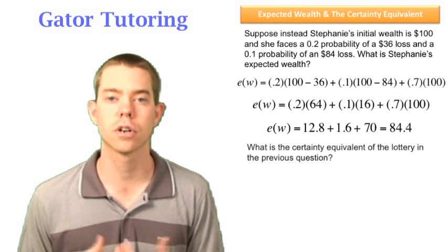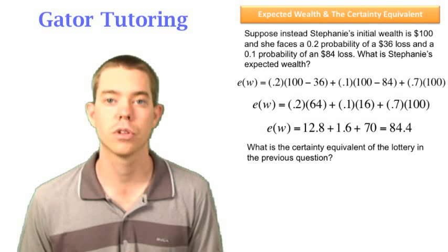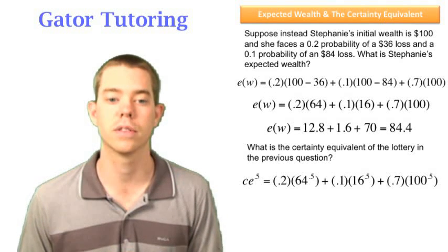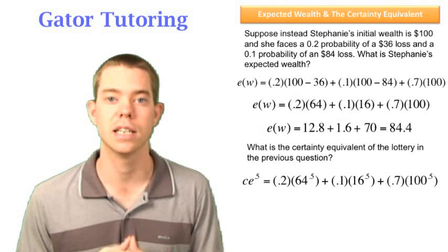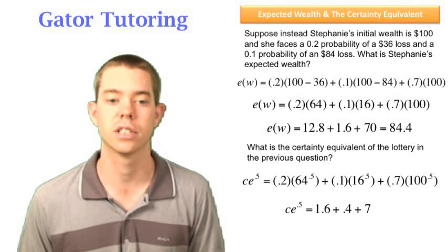The next question says, what is the certainty equivalent of the lottery in this previous question? Well, we know with the certainty equivalent, we're going to be looking at her utility function. So we bring that in. Now we're going to have some math on the right side equal to the square root of the certainty equivalent on the left. We condense this down. We see the right side is equal to 9. So we square 9. We can find the certainty equivalent and that's equal to $81.